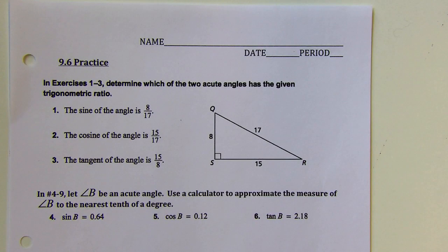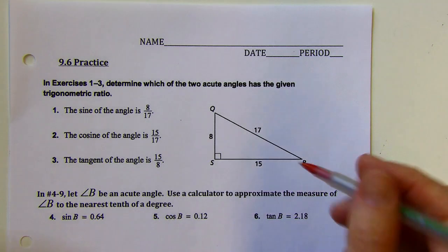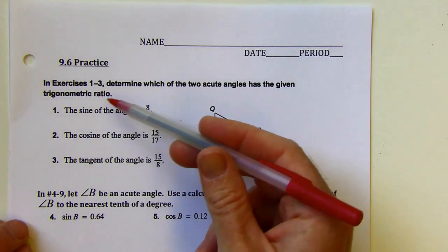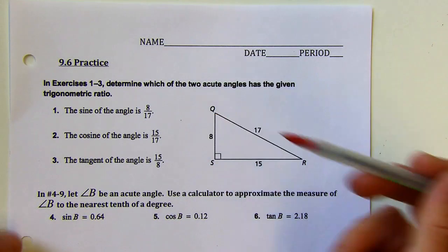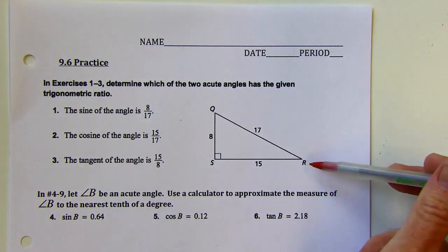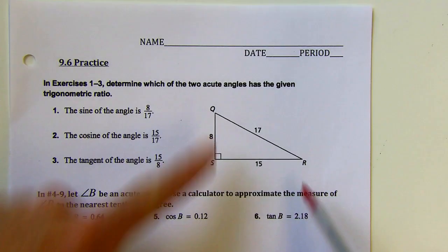Practice 9.6. The first set of questions says: determine which of the two acute angles has the given trigonometric ratio. So it's going to be either angle Q or angle R — those are my two acute angles.